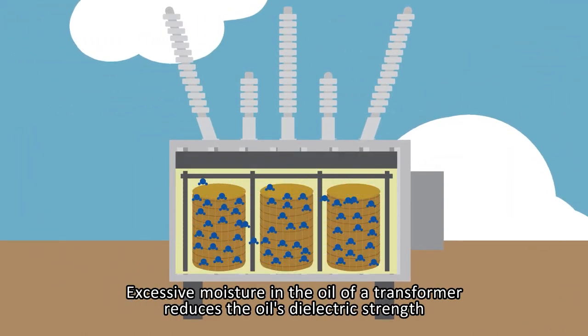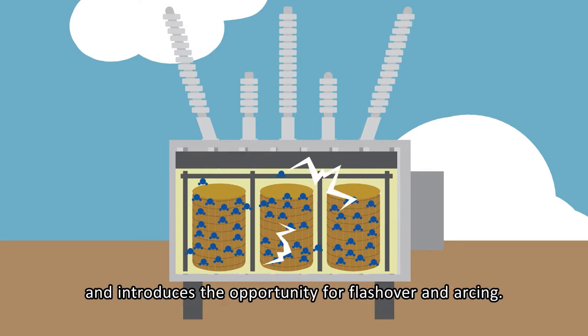Excessive moisture in the oil of a transformer reduces the oil's dielectric strength and introduces the opportunity for flashover and arcing.